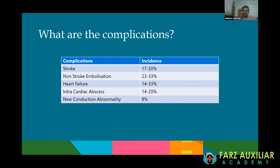Embolization is the most common complication of endocarditis, of which stroke is the most common. Non-stroke embolization to peripheral vessels, kidneys, spleen, and other organs also happens in one-third of patients. Heart failure can happen in 33 to 50% of patients with infective endocarditis. About one-fifth of patients will have an intracardiac abscess manifesting with pericardial effusions and conduction abnormalities. New conduction abnormalities as the sole manifestation occur in less than 10% of patients.